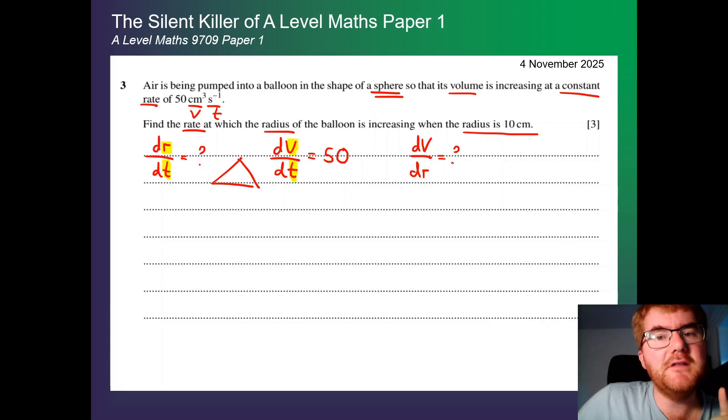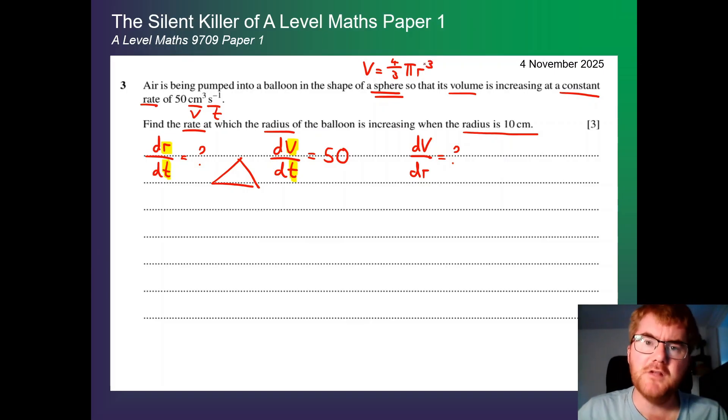Now it looks like we don't have enough information here. However, the balloon is in the shape of a sphere. And the formula for a sphere, the volume of it, is four thirds pi r cubed. So actually, we do have an expression that connects the volume with the radius. Now when we have that, let's write this under here, v equals four thirds pi r cubed. We can differentiate this. We can work out dv by dr.